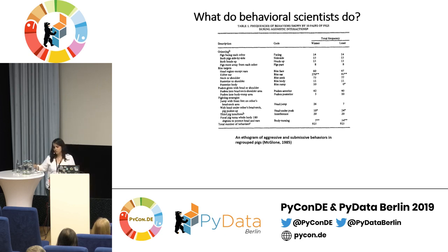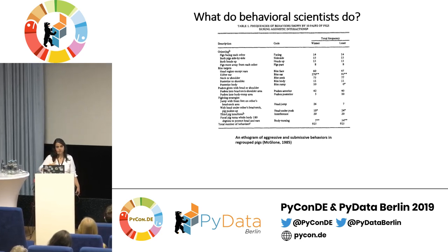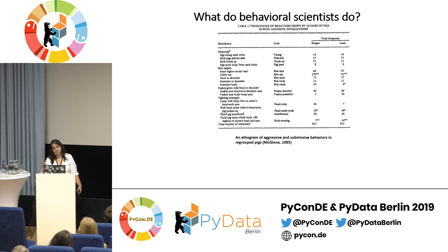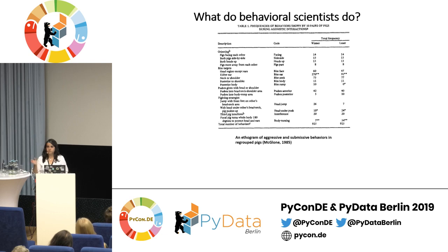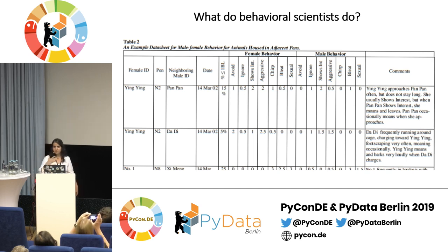What they did was record pigs for two hours, then different people watched the videos and made an ethogram. An ethogram means you watch animals and define particular behaviors, naming them — for example, this is an aggressive behavior, this is a courtship behavior. Here you see an example from a zoo where observers sit in front of pandas and watch them, making observations and writing down exactly what each panda was doing.